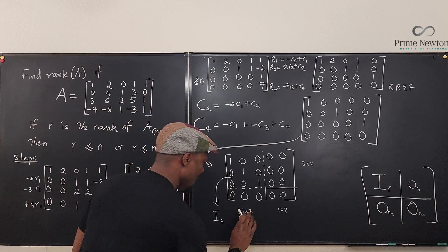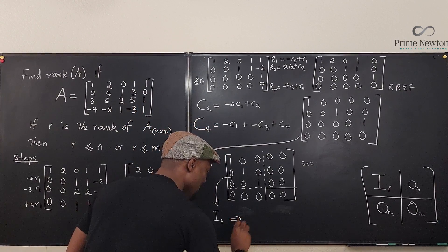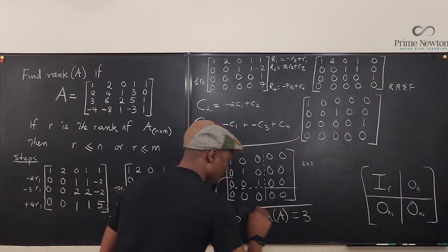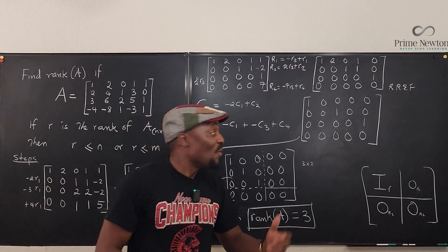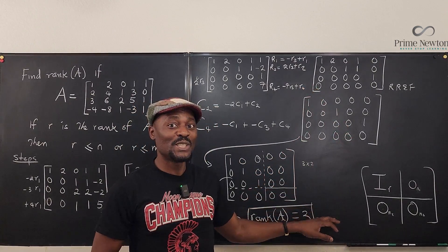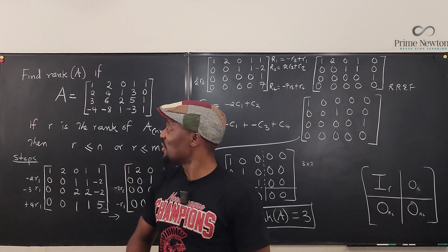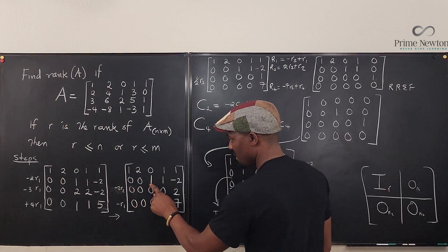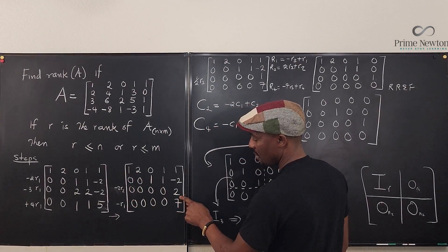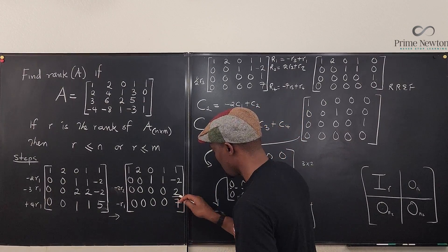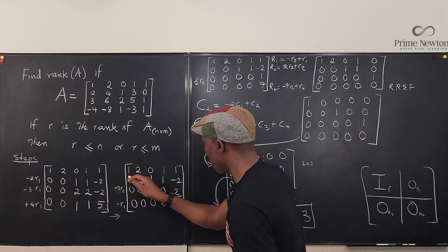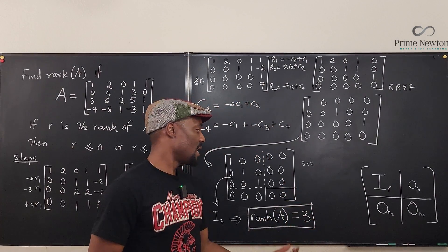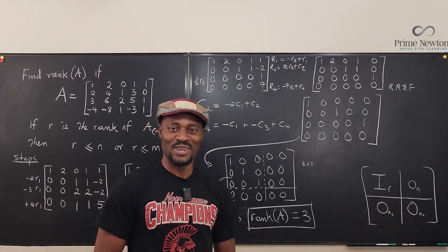So the rank of A equals three. Remember, we didn't have to go all the way to discover the rank — as soon as you find how many pivots there are, you know the rank. This is the first pivot, this is the second, and this is the third. Once you find your pivots you know the rank. But if you need to show your work all the way, this is what you must do. Never stop learning — he who stops learning stops living. Bye.